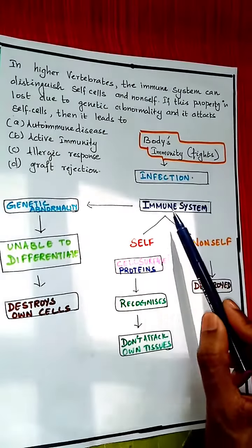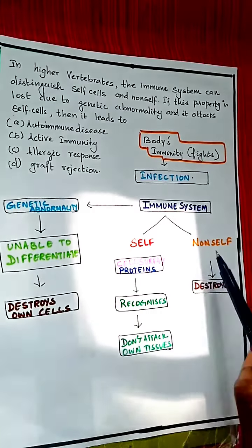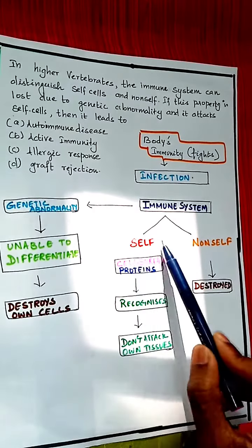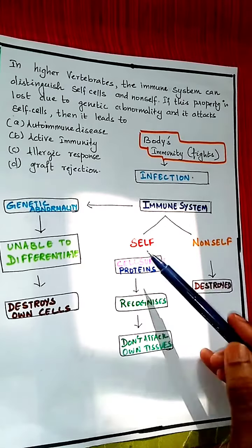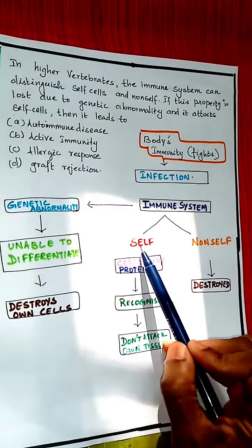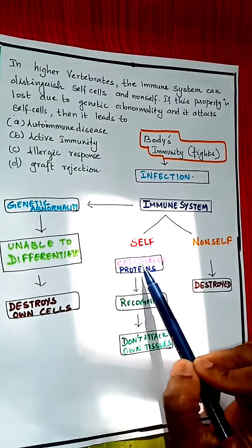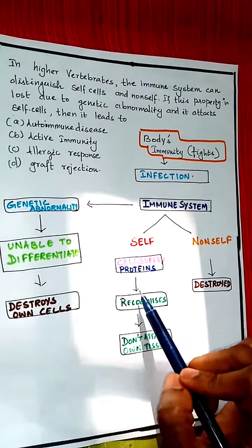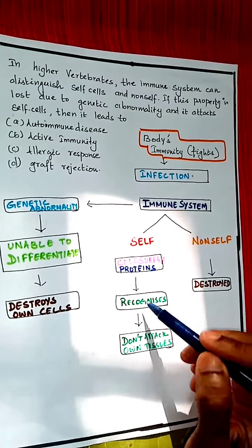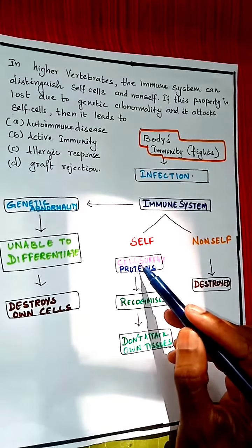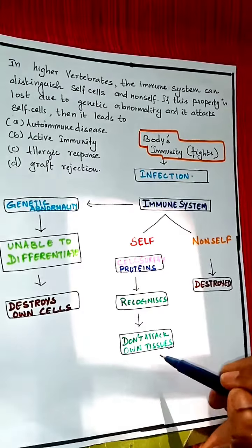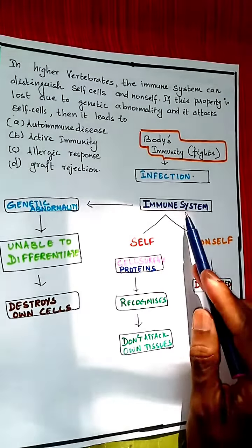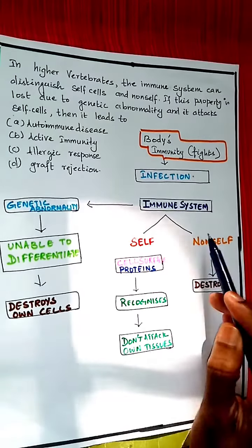Normally the immune system is able to differentiate self and non-self. Self means a part of you, and non-self means what comes from outside and enters the body, which may be harmful. The immune system recognizes our own body cells with the help of cell surface proteins, and decides they belong to our own body, so it does not attack our own tissues. When an organism enters the body, the immune system differentiates that it does not belong to the body, so it has to be destroyed before it multiplies.